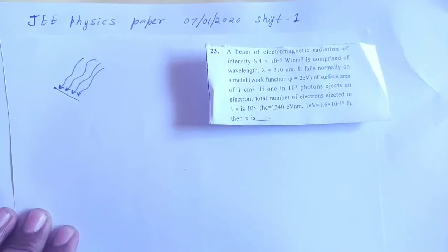JEE Physics paper, 7th Jan 2020, Shift 1, Question number 23. A beam of electromagnetic radiation of intensity 6.4 × 10⁻⁵ is composed of wavelength 310 nanometer. It falls normally on a metal work function 2 electron volt of surface area 1 centimeter square. If one in 10³ photons ejects an electron, find the total number of electrons ejected in one second.